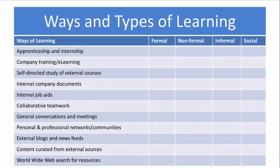This table illustrates various ways of learning. We've expanded this list from the six we just discussed, but all eleven items here fit into at least one of the six. Which ways of learning do you think are formal, non-formal, informal, or social? I suggest you pause the video now and write down your answers.